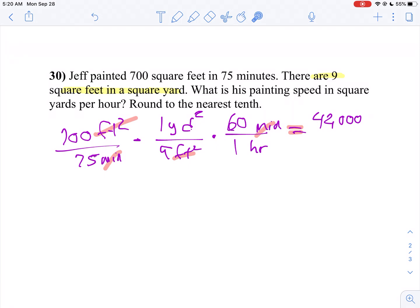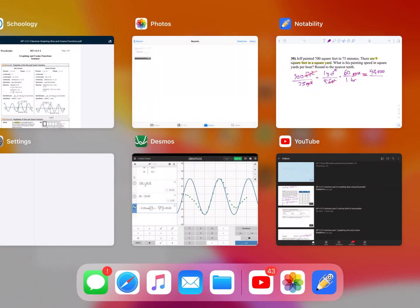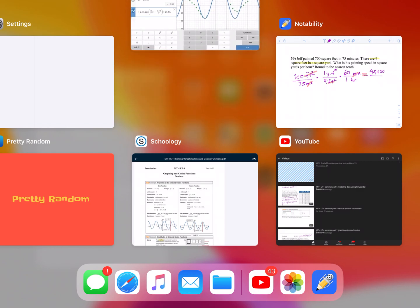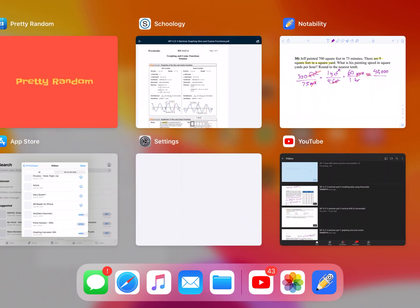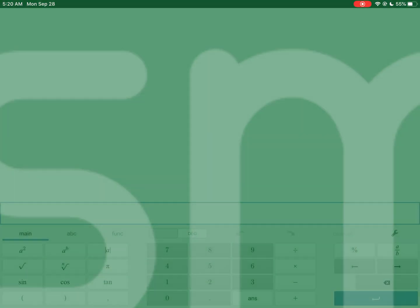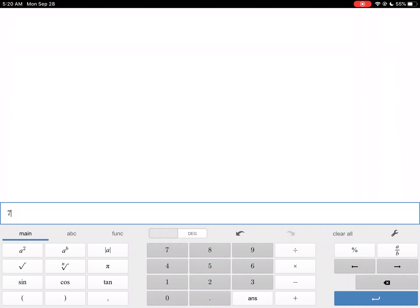Takes 75 times 9. I can't do that in my head, so I'm going to use my calculator for that part. You've got to find it though. There it is. And you've got to wait for it to open up. There we go. So now we're going to take 75 times 9. We get 675.